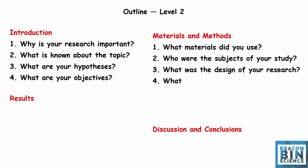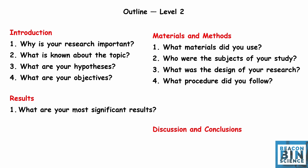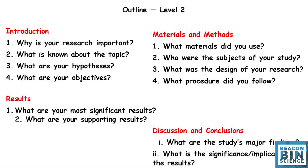Materials and methods also contain four different points. First, what materials did you use? Second, who were the subjects of your study — where you did your work, which cells you used, from where you procured them, all minor details. Third, what is the design of your research — for example, if you made a nanoparticle, explain how. Fourth, what procedure did you follow — all the procedures to make that nanoparticle. Put depth in your materials and methods, and remember the exact sequence.